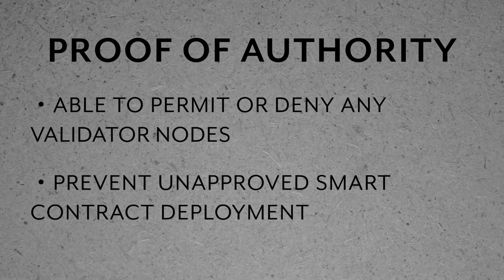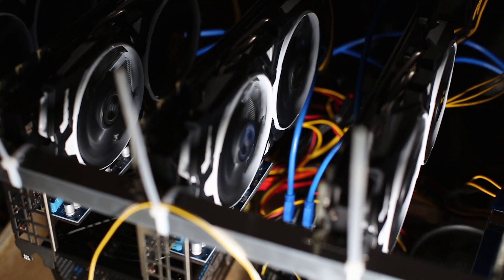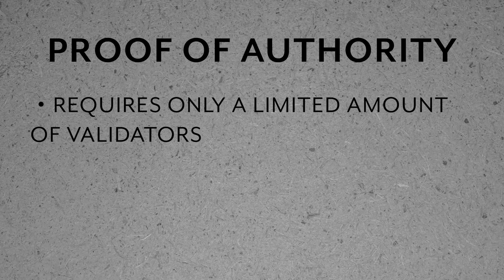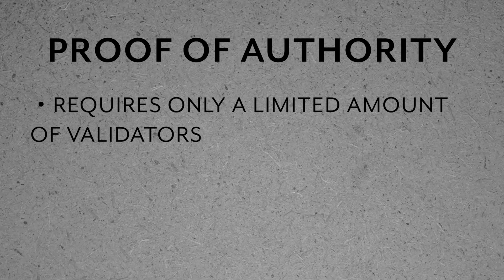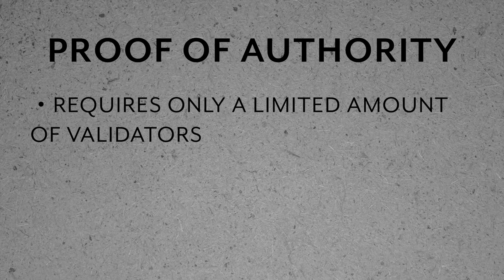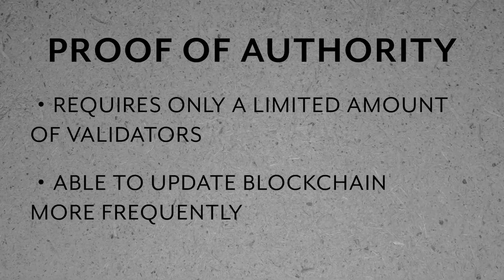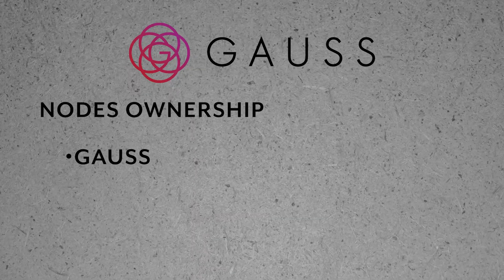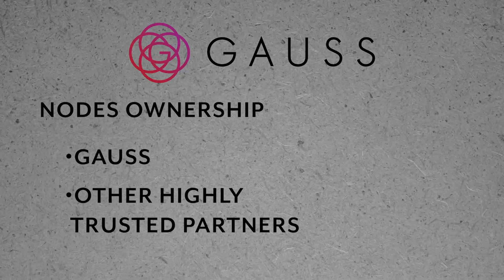This gives the ecosystem authority to permit or deny any validator nodes and prevent unproven smart contract deployment. Unlike the proof of work mechanism, there is no competition between validators. PoA networks require almost no computing power and therefore almost no electricity for their operation. Since the PoA network only requires a limited number of actors, the network can afford to update the blockchain more frequently by reducing the time between each block and process more transactions at a fraction of the cost. In GOSS's case, each node would be owned and operated by GOSS and other highly trusted partners in the future.